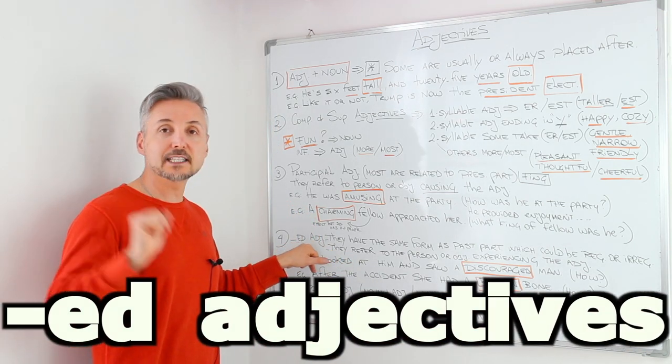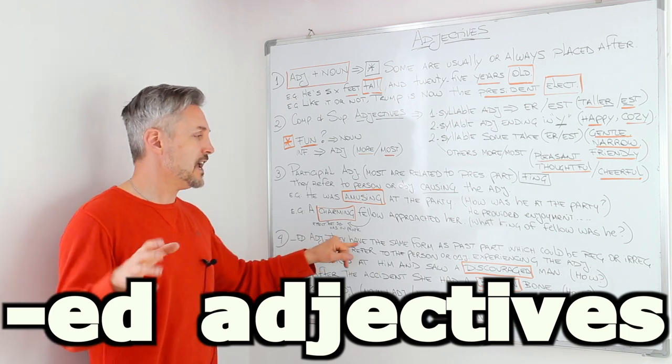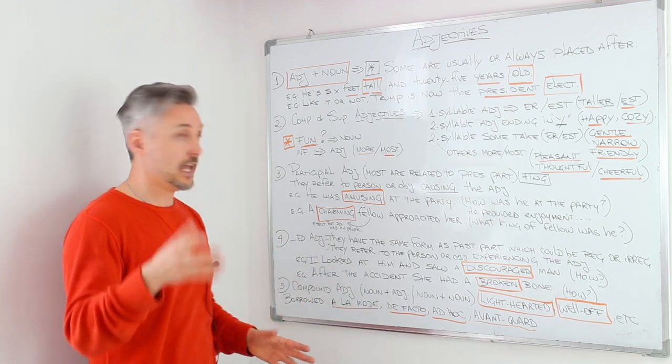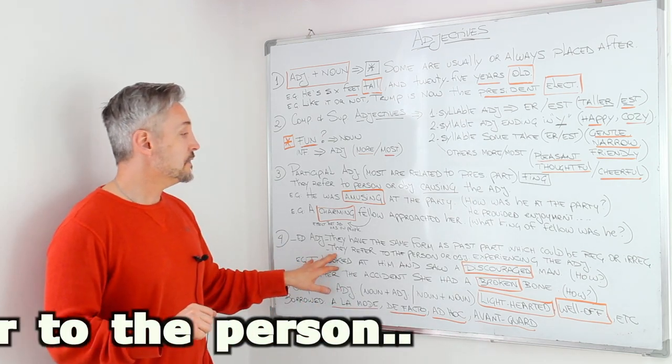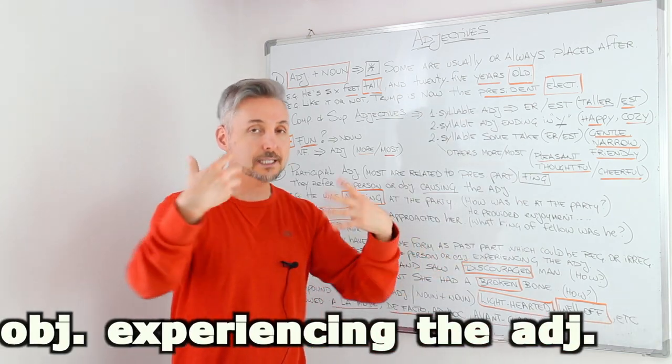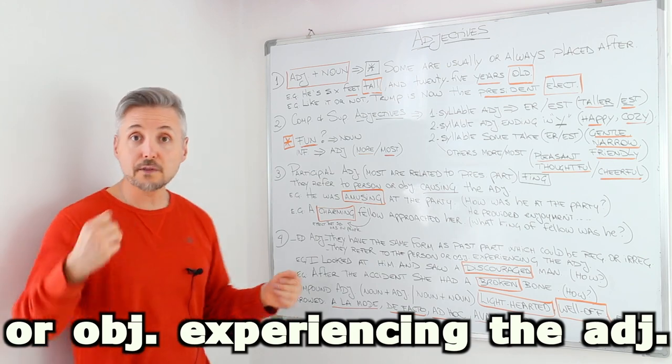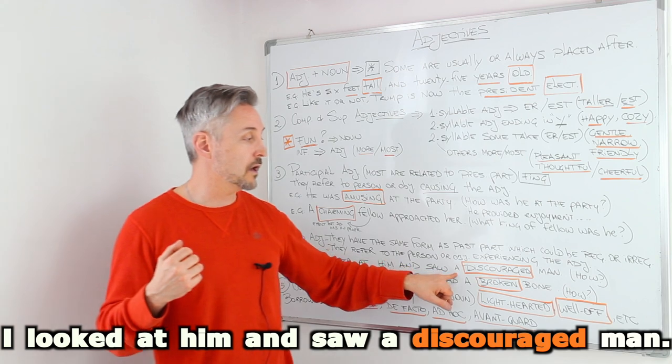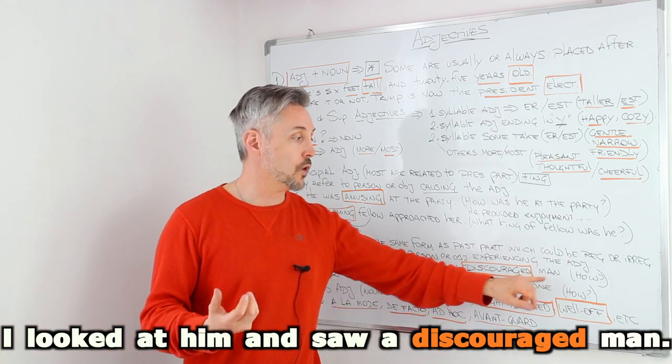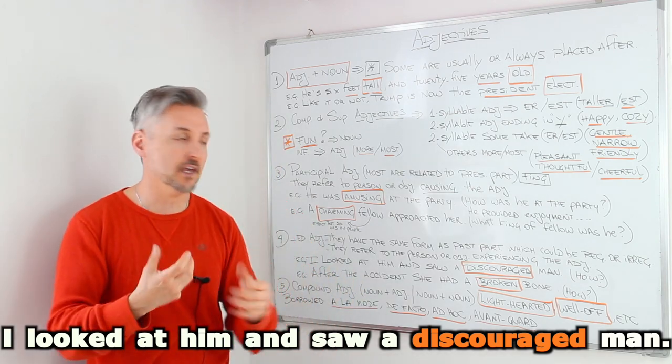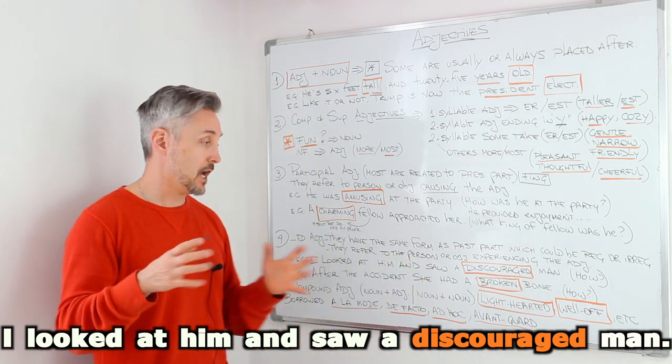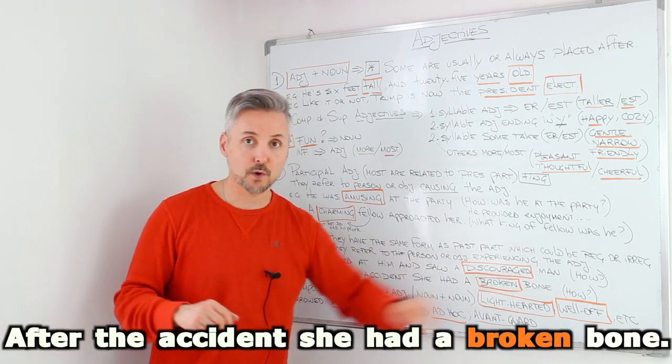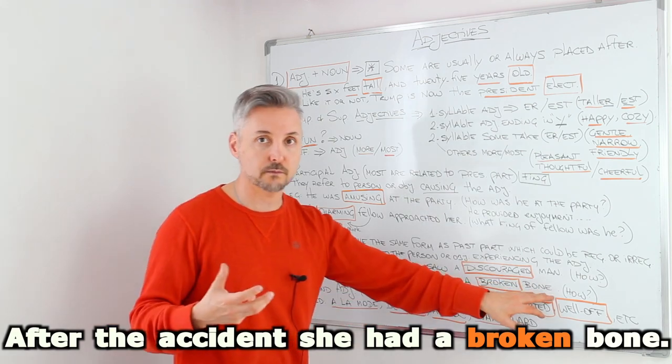Now, we have the ED adjectives. They have the same form as past participles. Which could be regular or irregular. And you know that. They refer to the person or object experiencing the adjective. So the example that I listed here is I looked at him and saw a discouraged man. So how was this man? How did he feel? He felt discouraged. Another example. After the accident, she had a broken bone. How was the bone? It was broken.